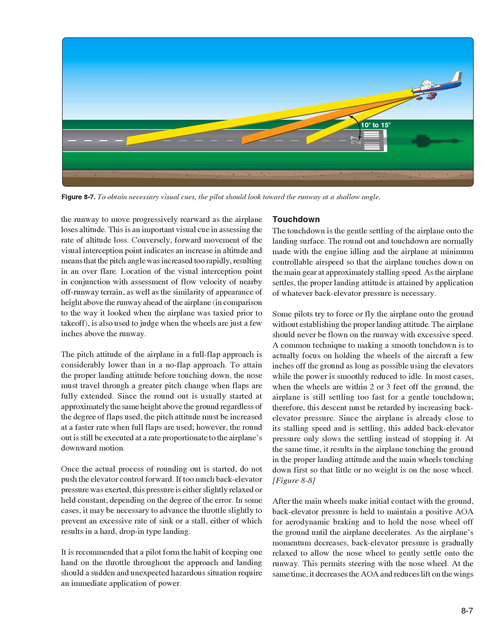Focus direct central vision at a shallow downward angle of 10 to 15 degrees toward the runway as the roundout/flare is initiated. Maintaining the same viewing angle causes the point of visual interception with the runway to move progressively rearward as the airplane loses altitude—an important visual cue in assessing the rate of altitude loss. Conversely, forward movement of the visual interception point indicates an increase in altitude and means the pitch angle was increased too rapidly, resulting in an overflare. The location of the visual interception point, along with assessment of flow velocity of nearby off-runway terrain and comparison to how the runway appeared during taxi, is used to judge when the wheels are just a few inches above the runway.